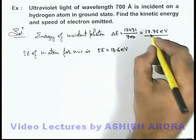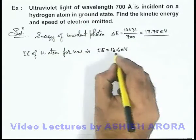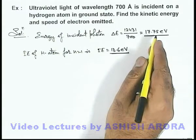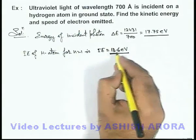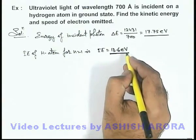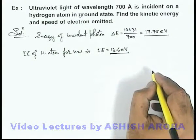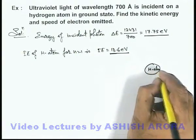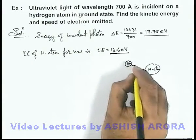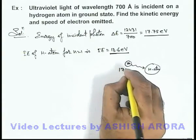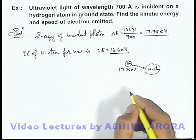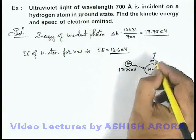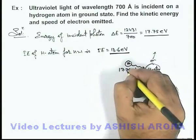Now here we can see the supplied energy of photon is more than this energy. That means out of the 17.75 electron volts, this much amount of energy is utilized by the electron in ejection from the atom. Say if this is hydrogen atom, and on which a photon is incident which is of energy 17.75 electron volts, which is more than the ionization energy.